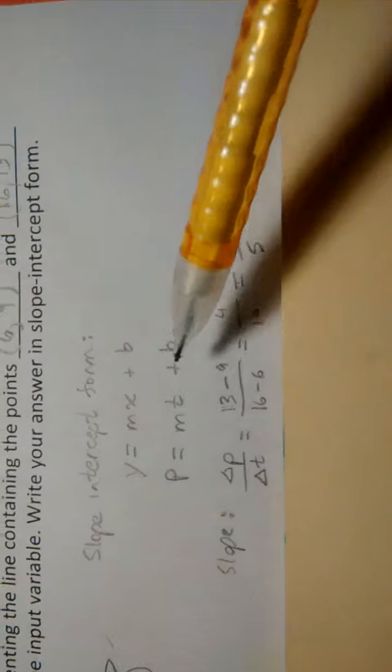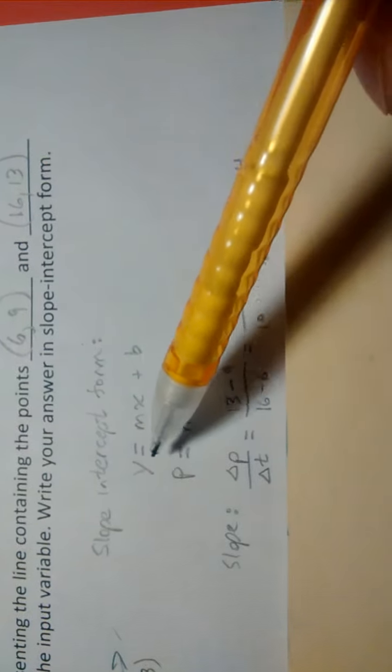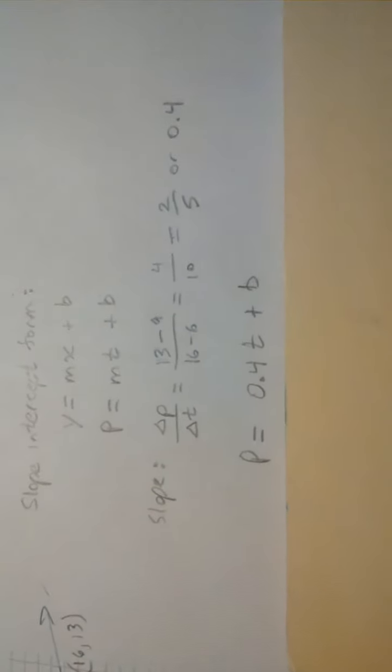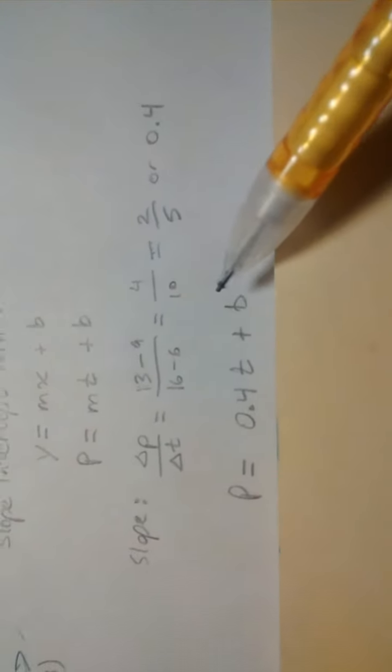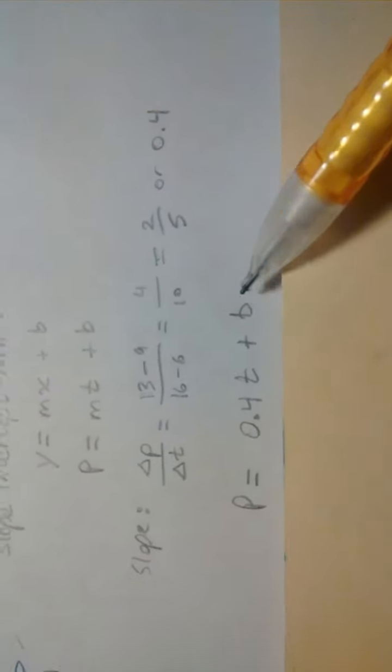And so now we can go back and say, oh, 0.4 must be the coefficient of the input variable in our symbolic rule. And that's right. So I would recommend writing that and then asking now, what is the vertical intercept of our line? And then that part of it goes there.